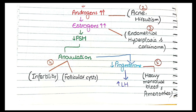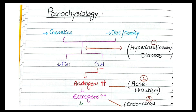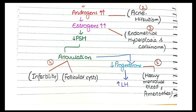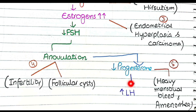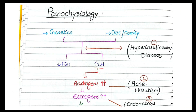To summarize the pathophysiology: polycystic ovarian syndrome is caused by an interaction of genetics and obesity, leading to decreased FSH and increased LH. Increased LH raises androgen levels; aromatase converts these androgens into estrogens. Increased estrogens cause feedback inhibition of FSH, leading to anovulatory cycles, resulting in infertility and follicular cysts. Lack of ovulation means no corpus luteum, causing decreased progesterone, which in turn causes an upsurge in luteinizing hormone.